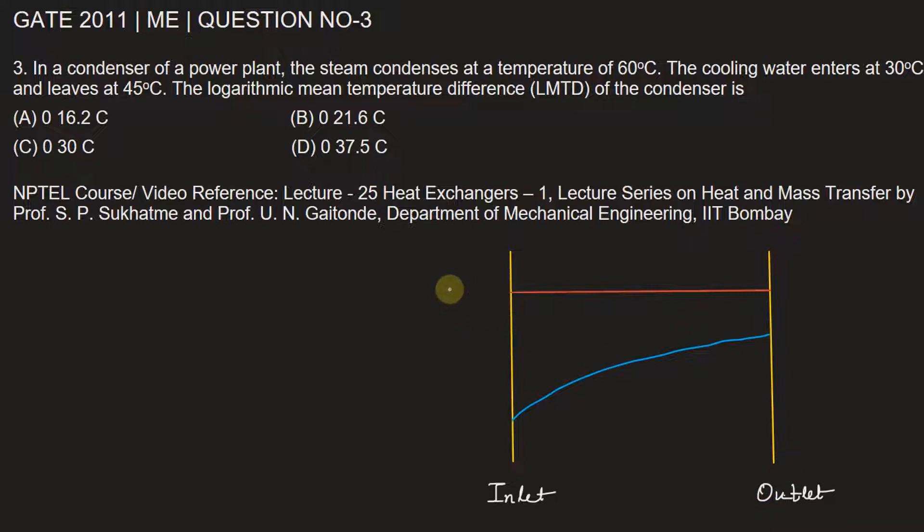The steam is at temperature that is 60 degrees Celsius, and the cold water is initially at 30 degrees Celsius. T1 is 30 degrees Celsius, and let's say Tc1, and Tc2 is 45 degrees Celsius.